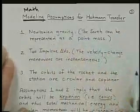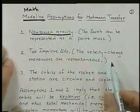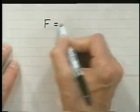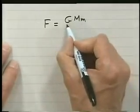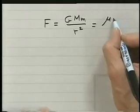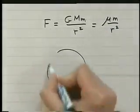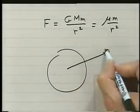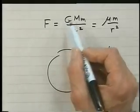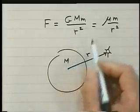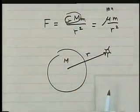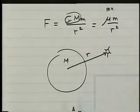The assumptions we list first: we're going to assume Newtonian gravity, meaning the Earth can be represented as a point mass, and that the gravitational force from the Earth is GMm over r squared — that's the magnitude of the force. We replace GM with mu, so the force becomes mu times little m over r squared. Here r is the distance from the center of the planet, G is Newton's universal gravitational constant, M is the mass of the planet, and G times M equals mu, the gravitational parameter. We almost always write mu instead of GM because they always come together and can't be accurately measured independently.